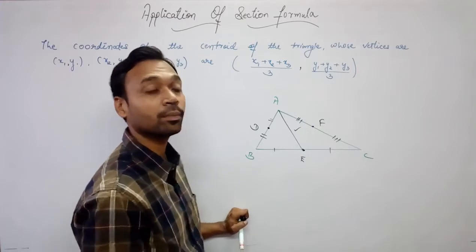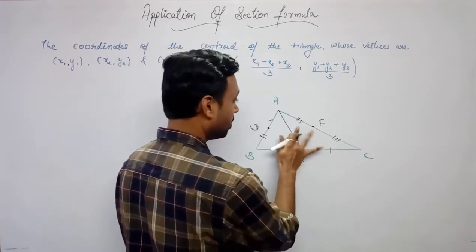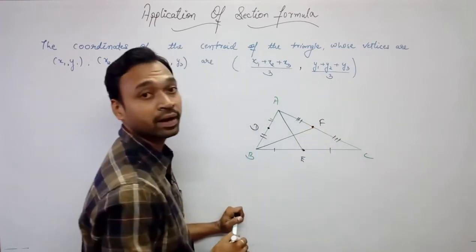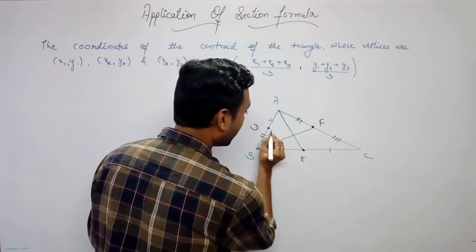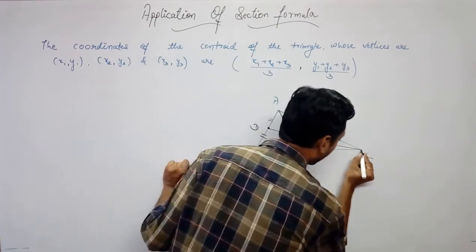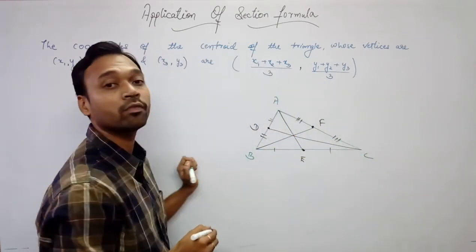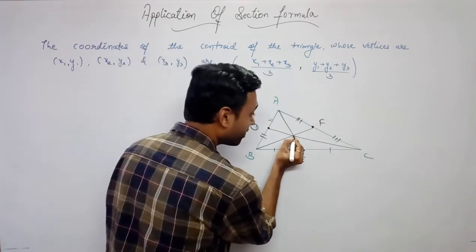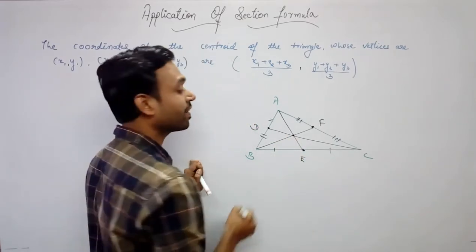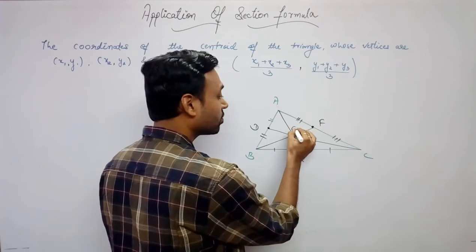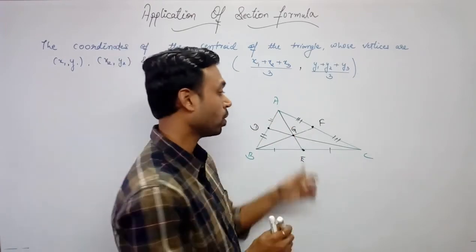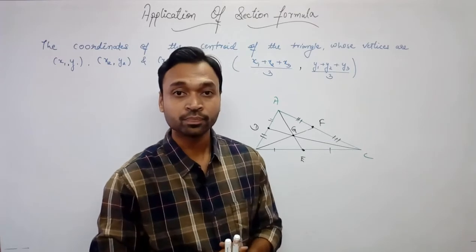When we join the midpoint of any side to the opposite vertex, that line segment is called a median. So here AE is one median, similarly BF is another median, and CD is also a median of this triangle. You can see that all three medians pass through a single point, which is called the centroid, and it is denoted by G.